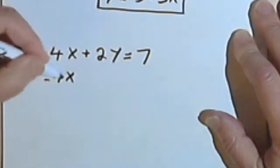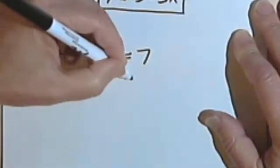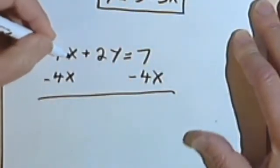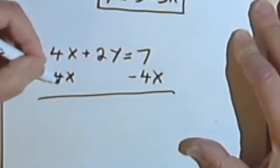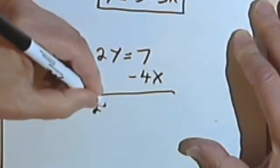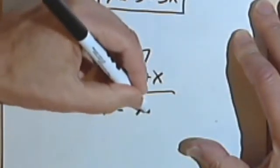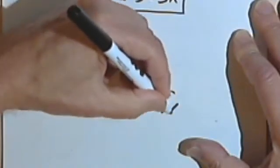In other words, I take what was added to this side and subtract it. So I'll subtract 4x. The 4x and the negative 4x cancel. I've got 2y. On the right side of the equation I've got 7 minus 4x.